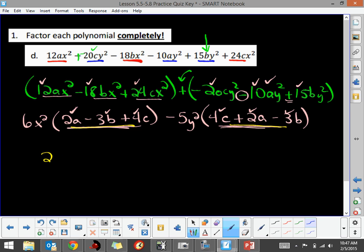So we're going to factor out our common factor out of our two terms. So I'm factoring out this common factor of 2A minus 3B plus 4C. And what's left is the 6X squared minus 5Y squared.